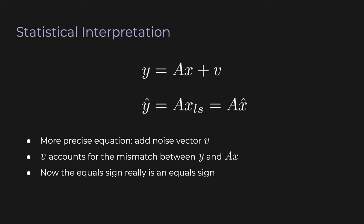The least squares solution x_ls is our estimate of x in the presence of noise. The vector v we can't see — it's something we presume to be there. What we observe is just y and A. We want to recover x, but we can't recover it perfectly in the presence of noise — we just give our best effort, and the best effort in this case is the least squares solution.